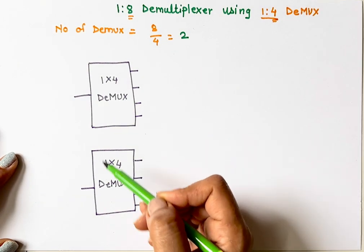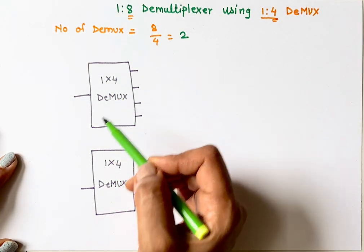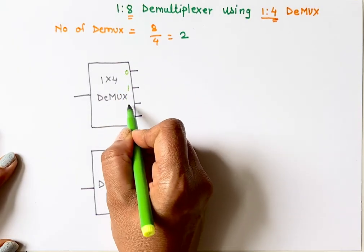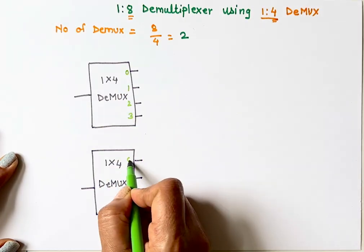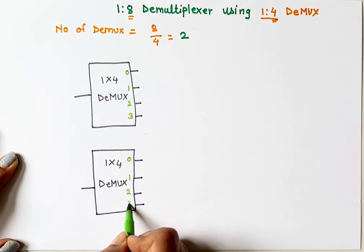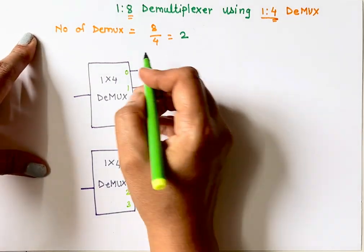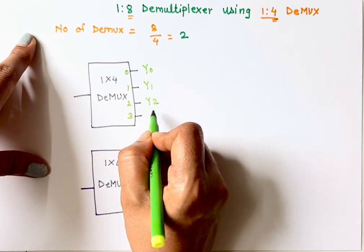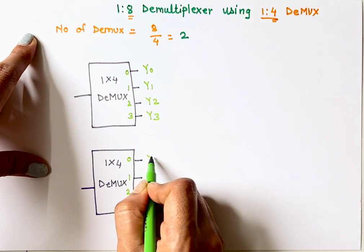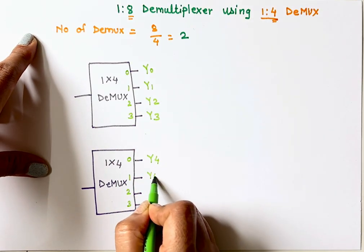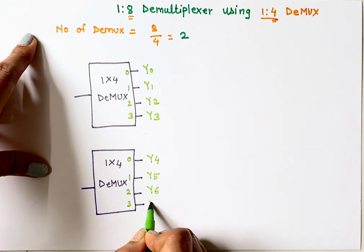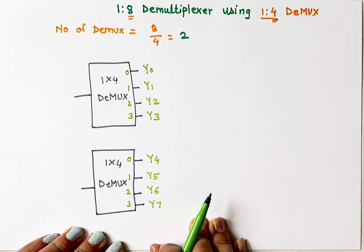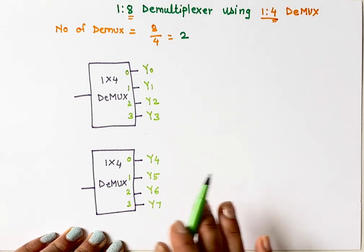These two are my 1x4 demultiplexers. Their outputs are 0, 1, 2, 3 for the first, and 0, 1, 2, 3 for the second. I will label them as Y0, Y1, Y2, Y3 for the first demultiplexer, and Y4, Y5, Y6, Y7 for the second. So from Y0 to Y7, I now have a total of 8 outputs.